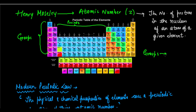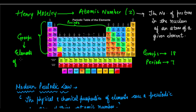In the modern periodic table, we have 18 groups and 7 periods. He made 18 groups and 7 periods, and in a group there were elements of similar properties.